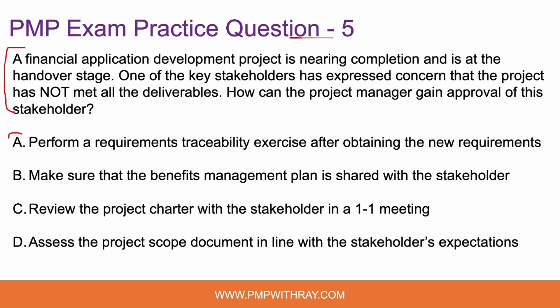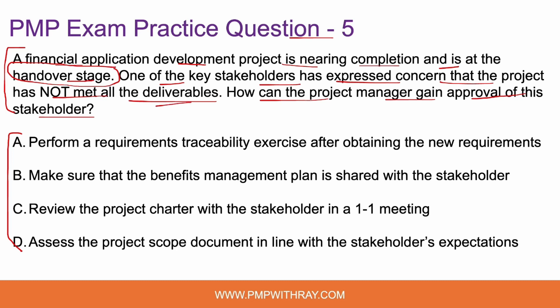Question number five — please read the question and try to answer it before we move forward. A financial application development project is nearing completion and is at the handover stage. Note that the project is not yet completed — it is somewhere between monitoring and controlling and the closeout process within the five-stage project life cycle: initiation, planning, execution, monitoring and controlling, and closeout. One of the key stakeholders has expressed concern that the project has not met all the deliverables. How can the project manager gain approval from this stakeholder to complete the handover stage?